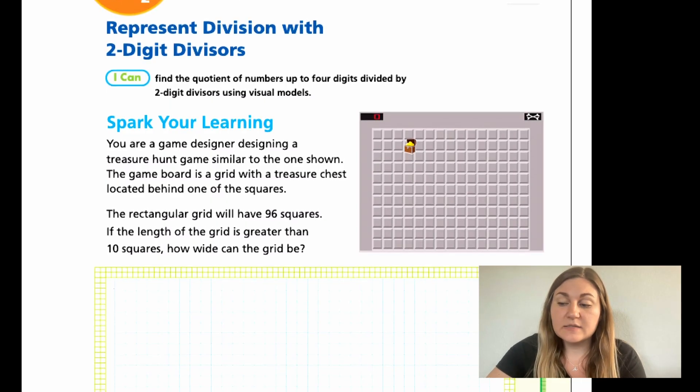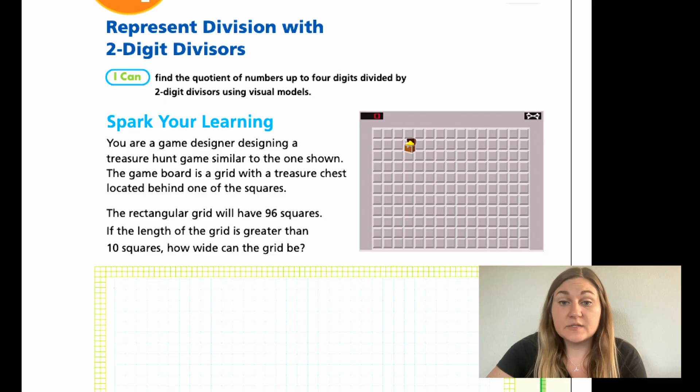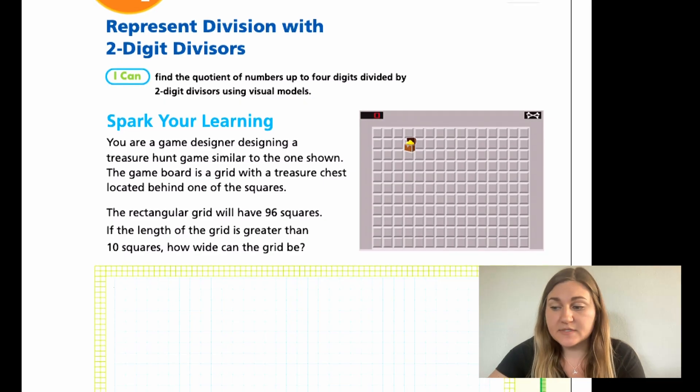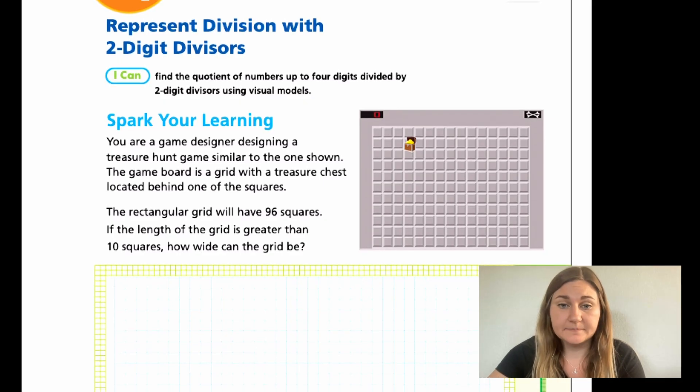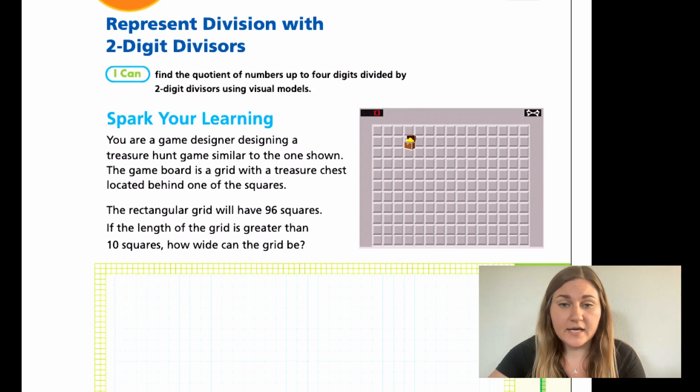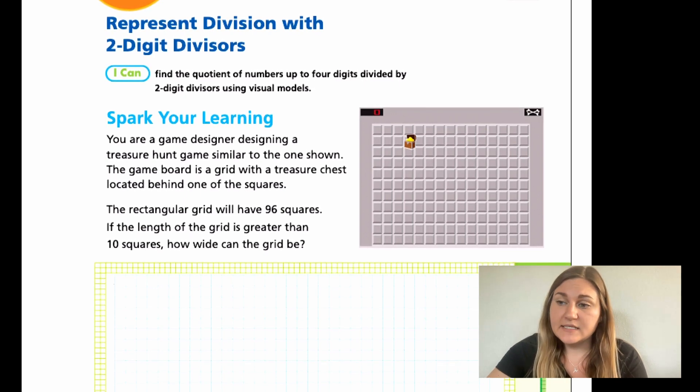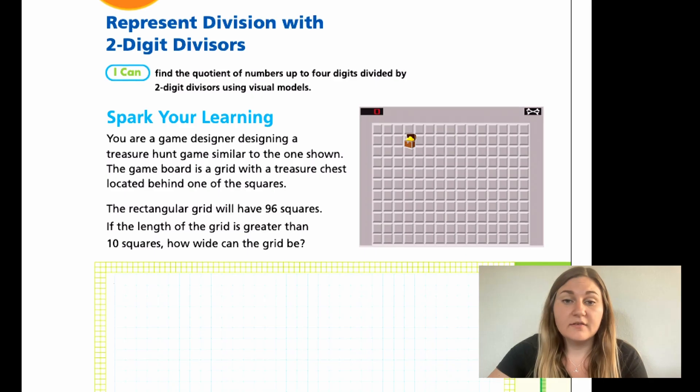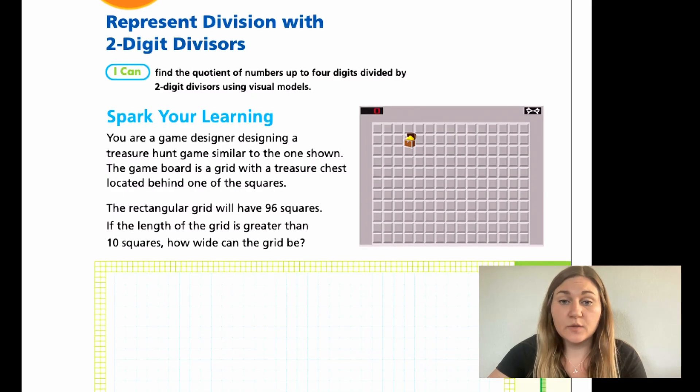So, the total area needs to be 96, but one of the sides, the length, needs to be longer than 10. I know if it has to be larger than 10, my next guess would be 11. Is there anything times 11 that would equal 96? No. But what about 12? Yes. 96 divided by 12 is 8. So, that can work.